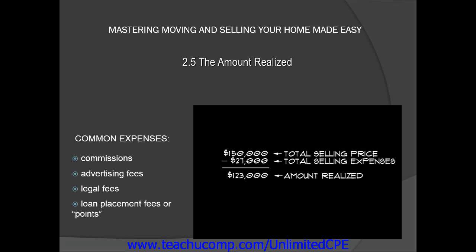This resulting number is the amount realized from the sale of the home. For example, if an individual sold his or her main home for $150,000 and paid $27,000 in total for expenses related to the sale of the home, the total amount realized from the sale would be $123,000.